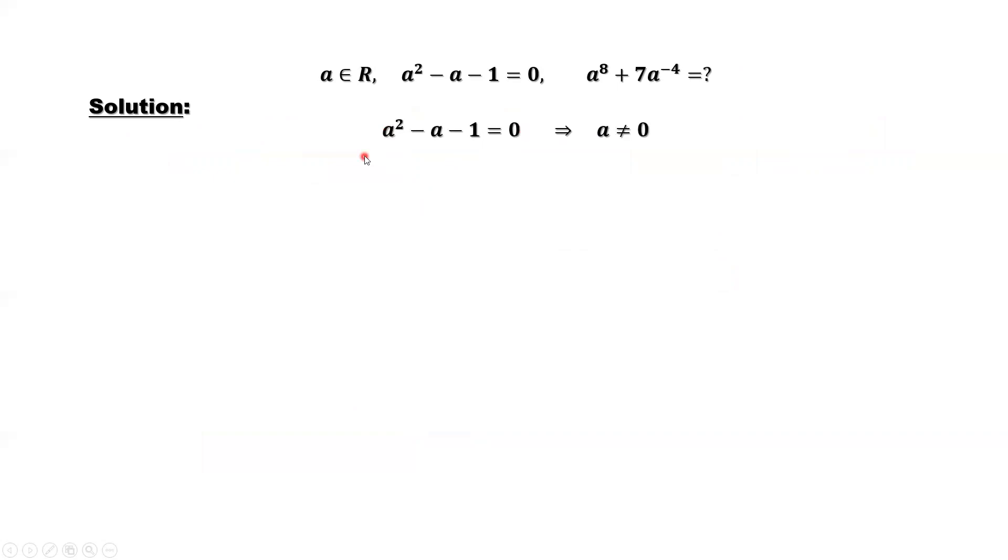This is the given information. We can easily check a is not 0. A equals 0 is not the answer. If a is not 0, both sides can be divided by a.